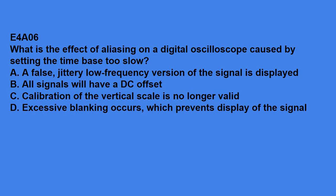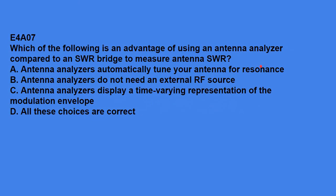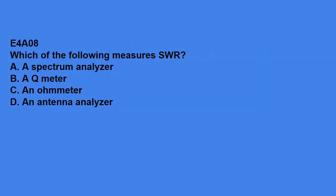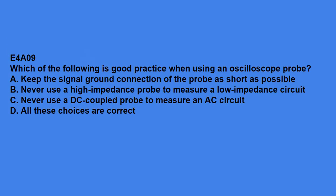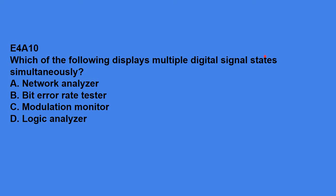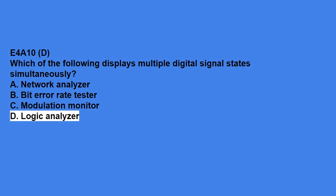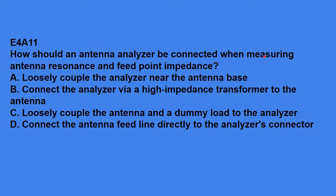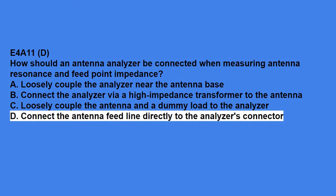E4A06, what is the effect on aliasing on a digital oscilloscope caused by setting the time base too slow? A false jittery low frequency version of the signal is displayed. E4A07, which of the following is an advantage of using an antenna analyzer compared to an SWR bridge to measure antenna SWR? Answer is B, antenna analyzers do not need an external RF source. E4A08, which of the following measures SWR? Answer is an antenna analyzer. E4A09, which of the following is a good practice when using an oscilloscope probe? Answer is keep the signal ground connection of the probe as short as possible. E4A10, which of the following displays multiple digital signal states simultaneously? Answer is logic analyzer. E4A11, how should an antenna analyzer be connected when measuring antenna resonance and feed point impedance? Answer is connect the antenna feed line directly to the analyzer's connector.